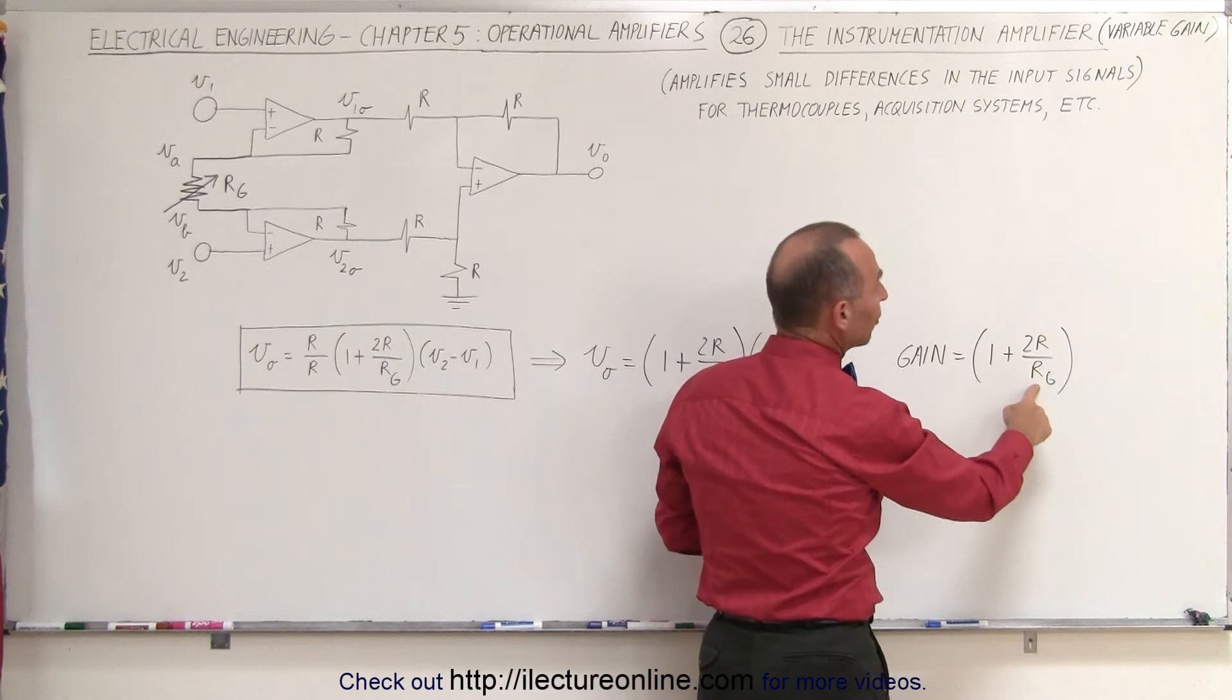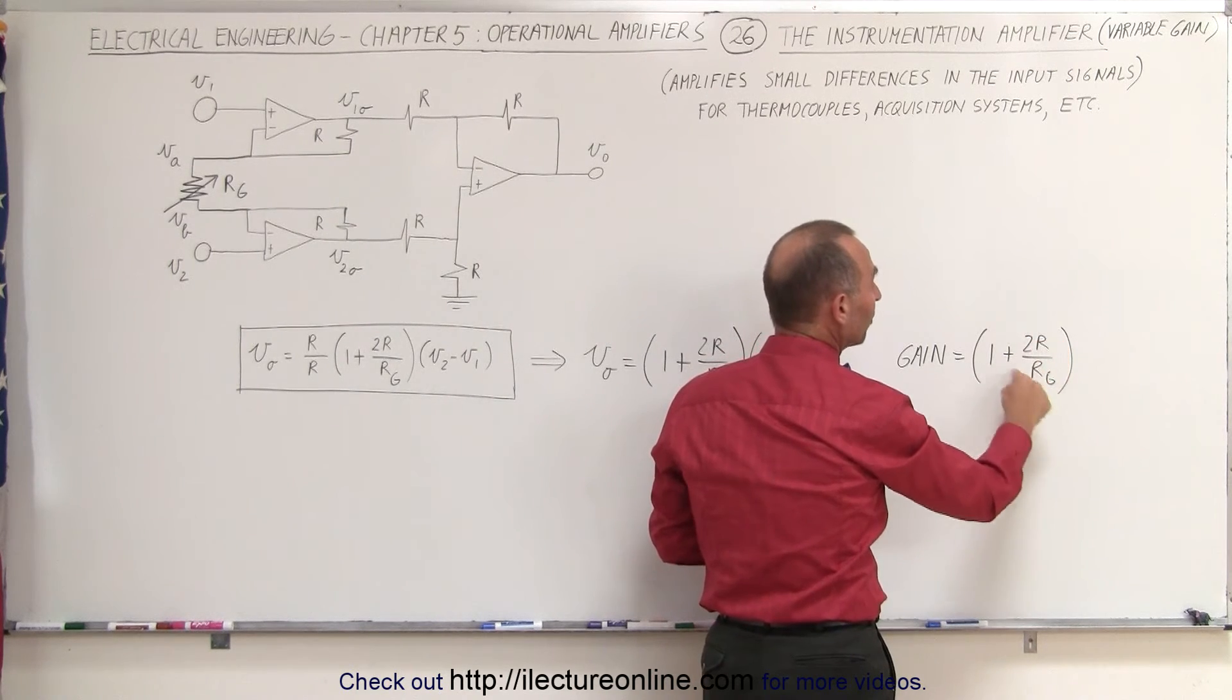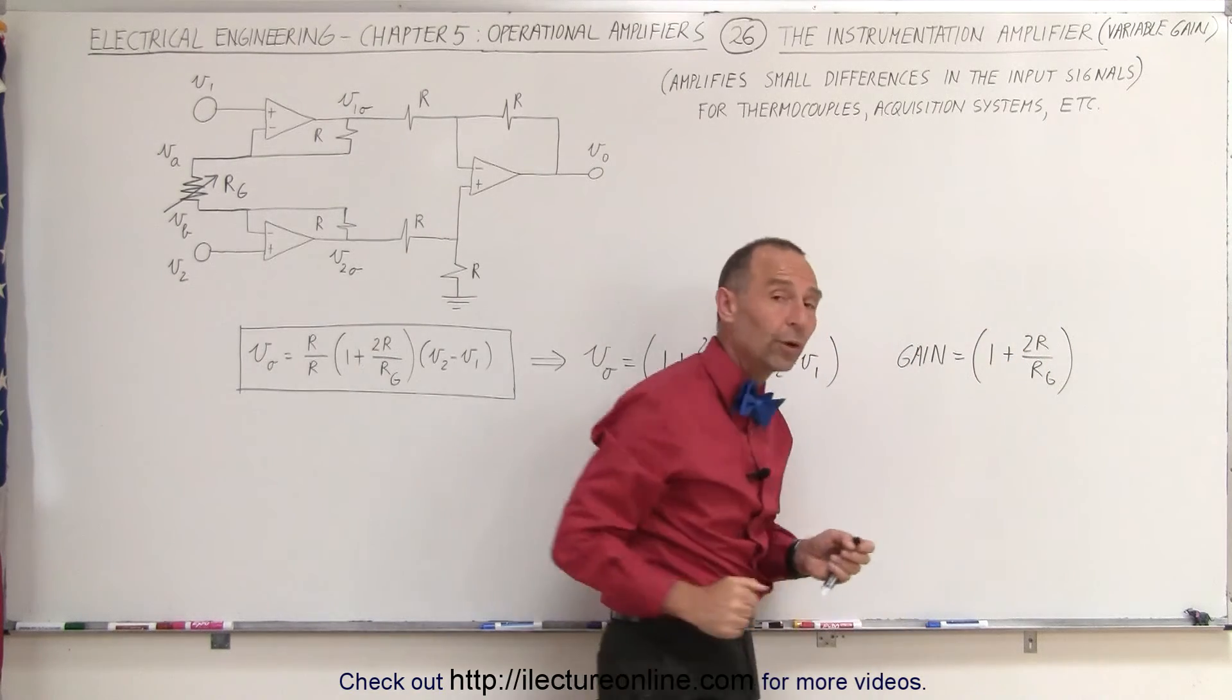And for example, if you make the gain resistor 1 tenth this resistor, that would be 20 to 1 plus 1, that would be a 21 to 1 gain.